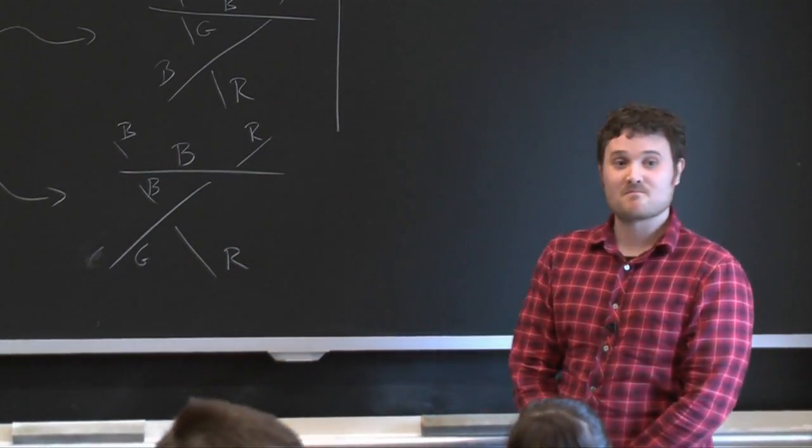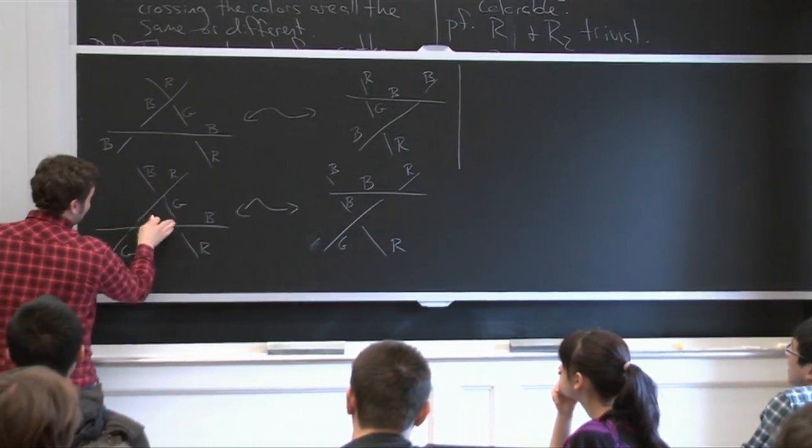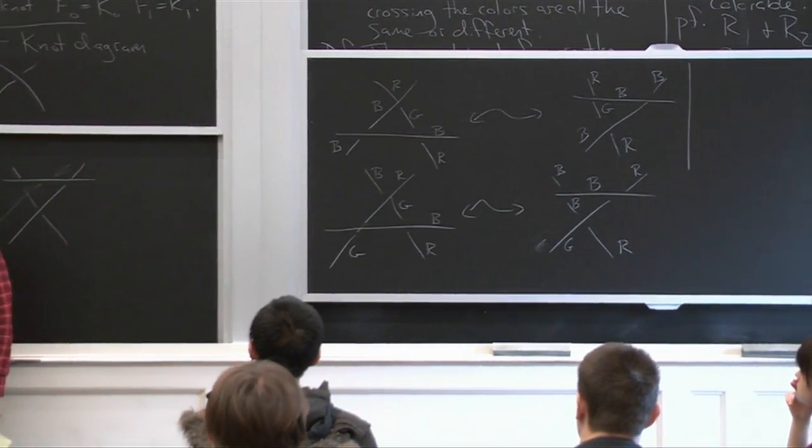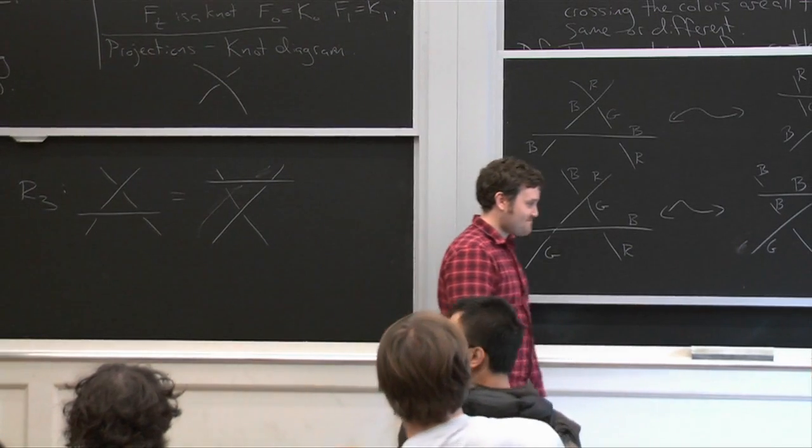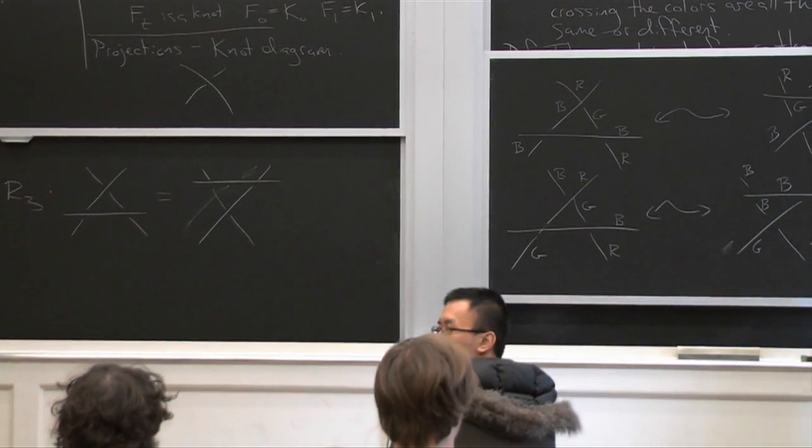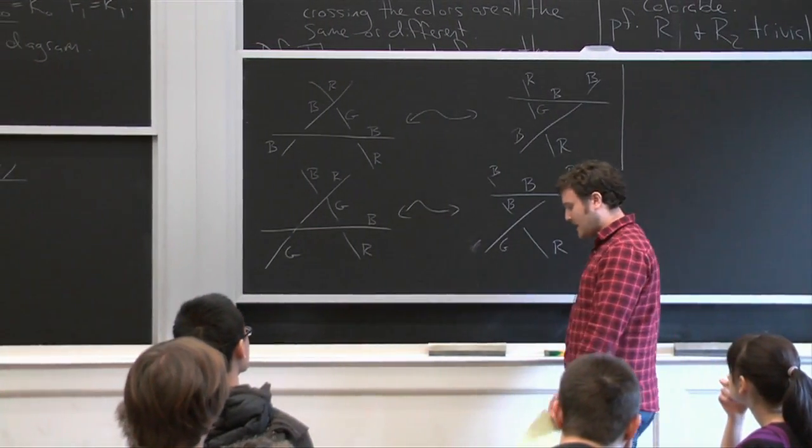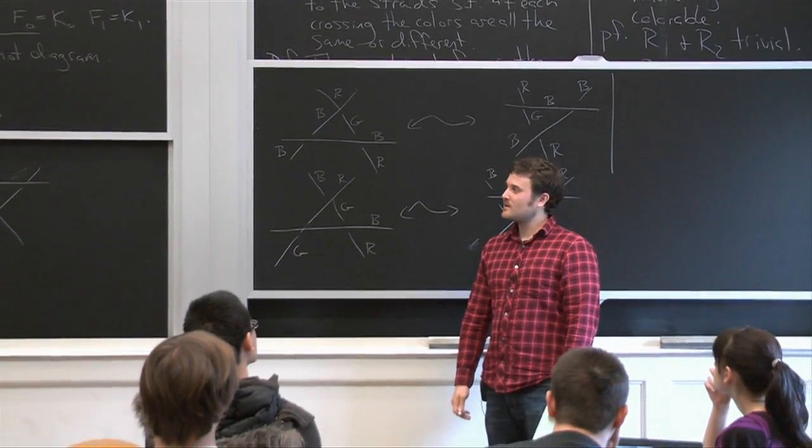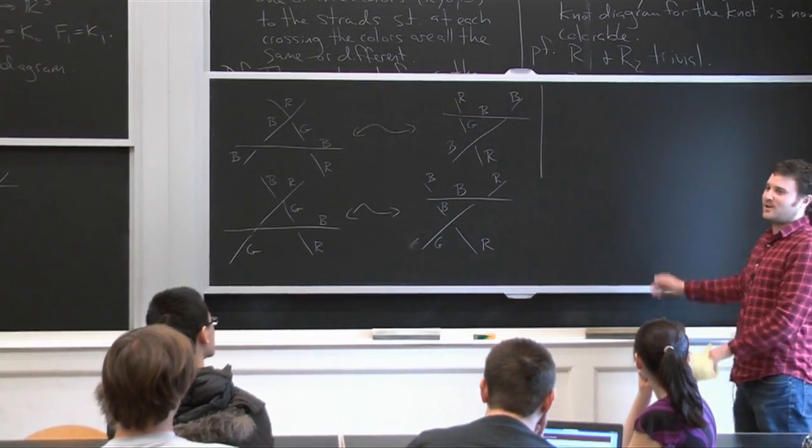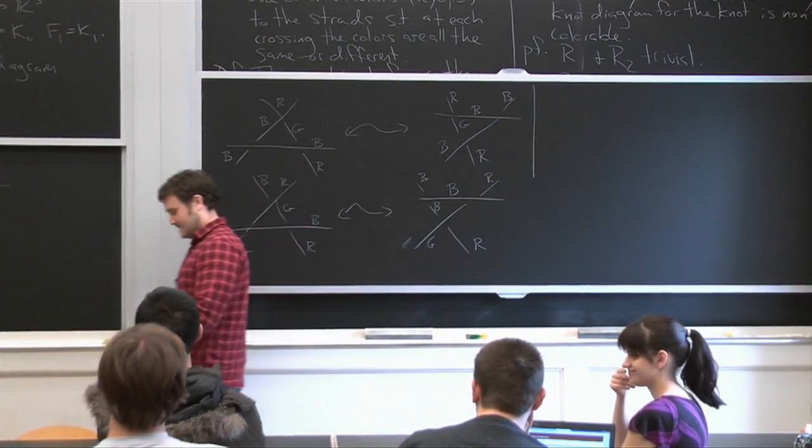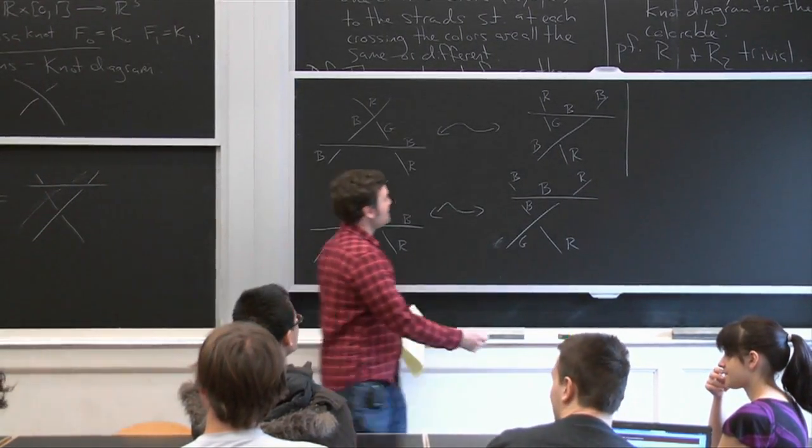Did you ever define what strand was? Oh, a strand is just, in the knot diagram, a strand is just one of these segments. Can you give an example of a knot which is not colorable? Not non-trivially colorable? Well, oh, I guess, actually I heard that the figure eight knot has that property. But I can't remember how that goes. I don't really like drawing knots. Okay. So should I put my two questions up? Yes, there is a quiz.